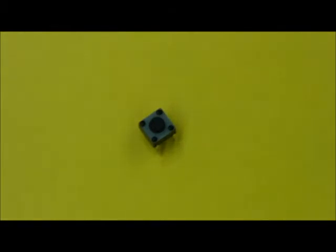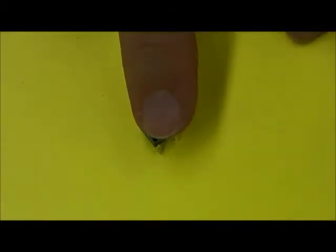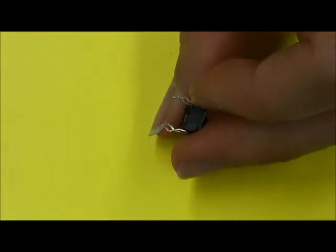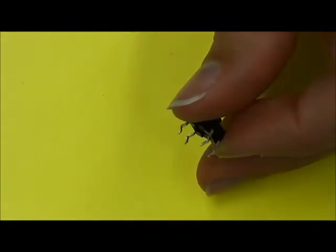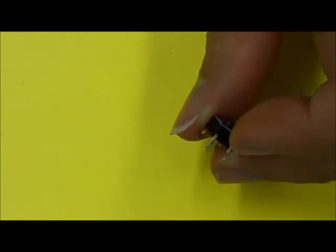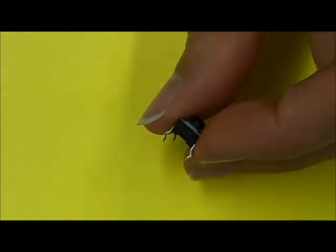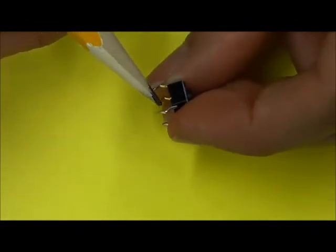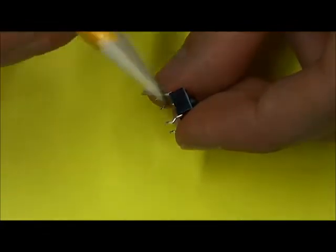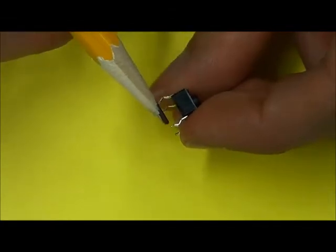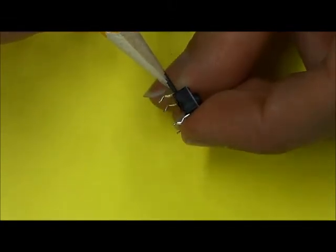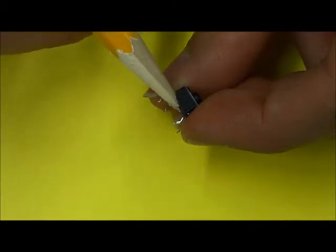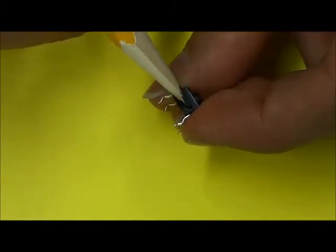So the next component I want to look at is a switch. These are small push button switches. You push the button, it makes contact between the two sides of the switch. Now you'll notice there are actually four legs on the switch, which may seem confusing because usually a switch connects two pieces together. In this particular case, you actually have two separate wires. This is one wire. It comes up into the switch, goes through the switch, and comes out the other side. So this is actually one wire that goes all the way through the switch.